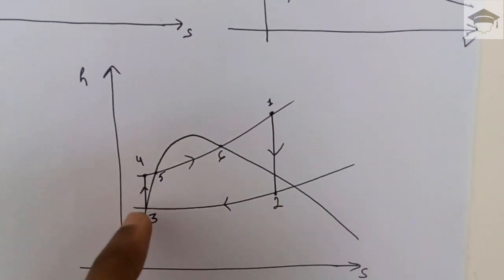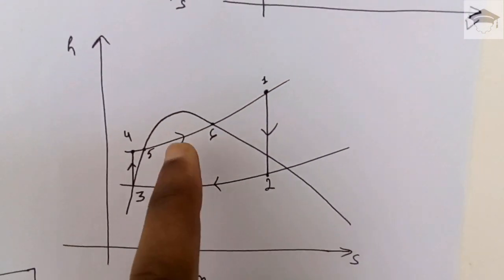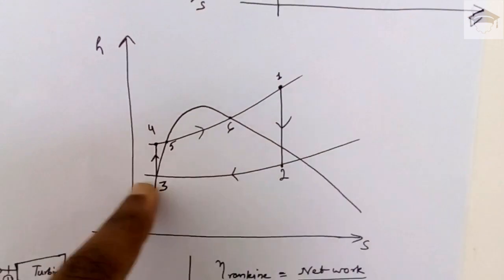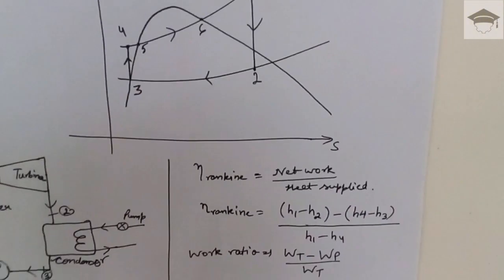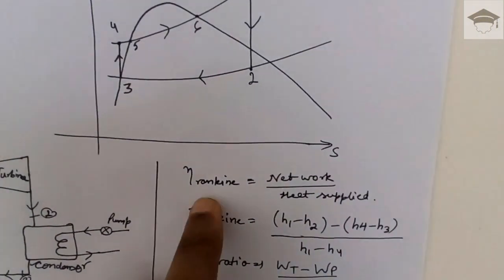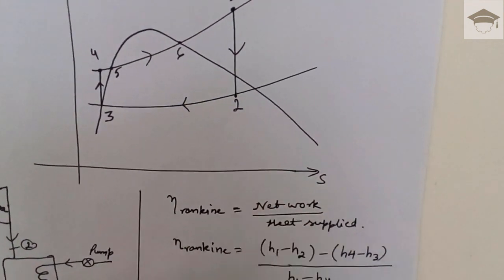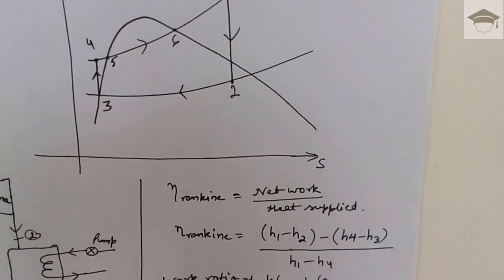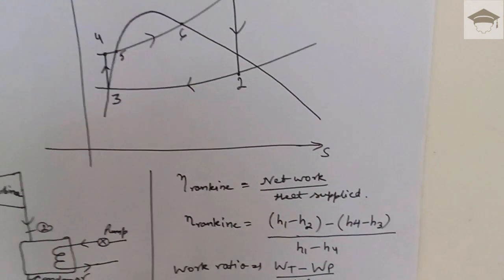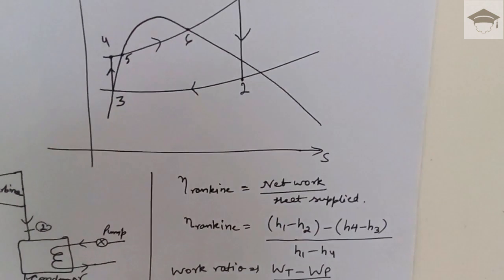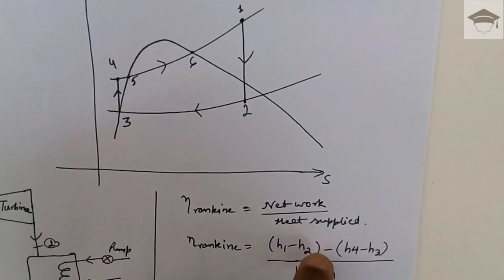The Rankine cycle thermal efficiency is the net work divided by the heat supplied. Net work equals the work output of the turbine minus the work input to the pump — that is what we get minus what we supply. Work from the turbine is h1 minus h2, and work supplied to the pump is h4 minus h3 (since h4 is higher). So net work equals h1 minus h2 minus (h4 minus h3).